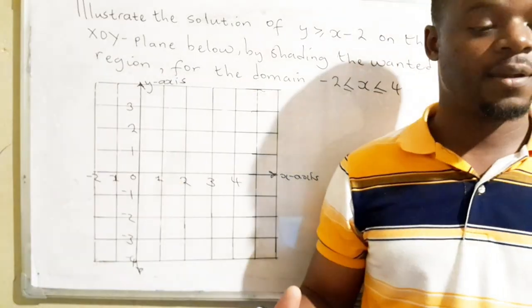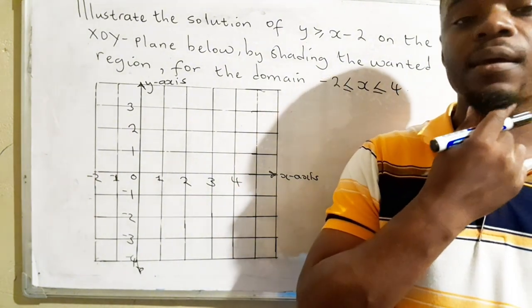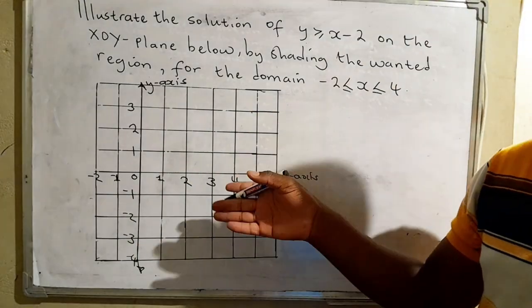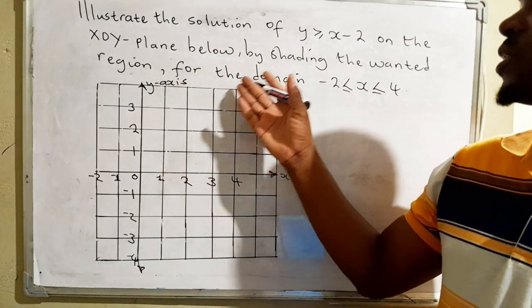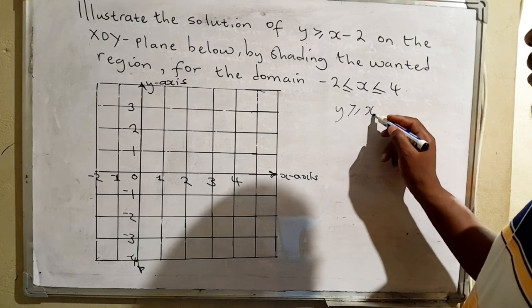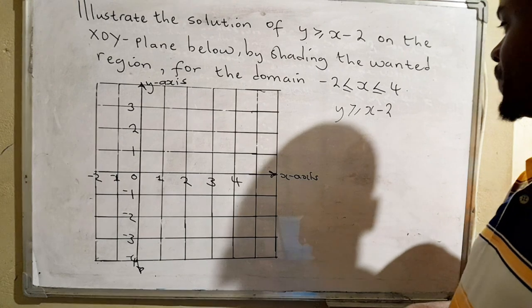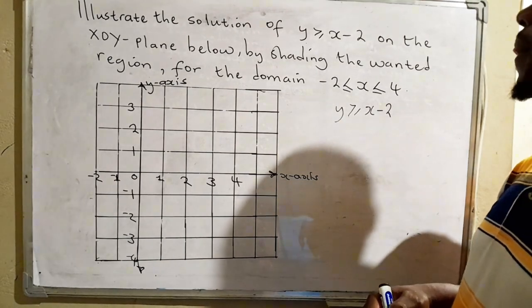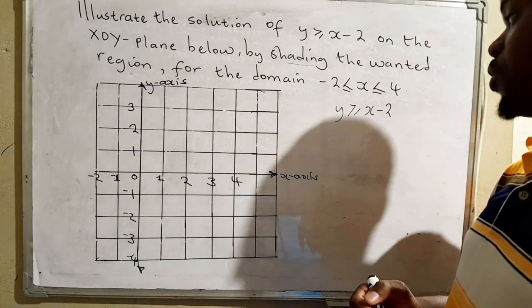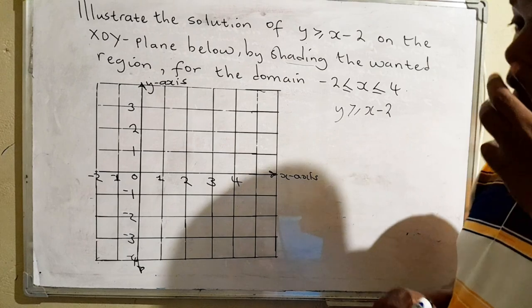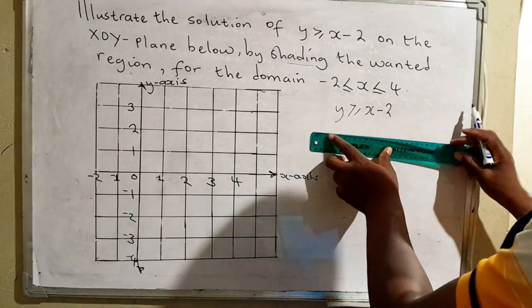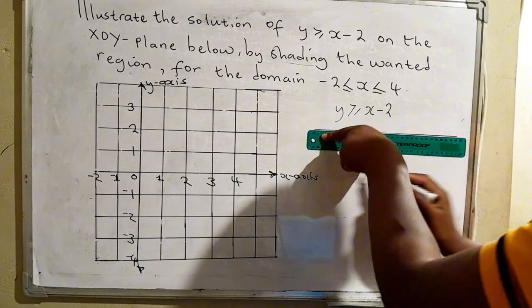All right, so the next question has to do with linear inequalities. How you can actually illustrate those inequalities on the X Y plane. So we have this problem here, which says illustrate the solution of this inequality. You can also turn it into an equation. That's what we have. We need to show that on the X Y plane, and then we have to shade the wanted region. So how would you do that? You first of all have to plot the graph of that equation. So how would you do that? You come up with a table of values.